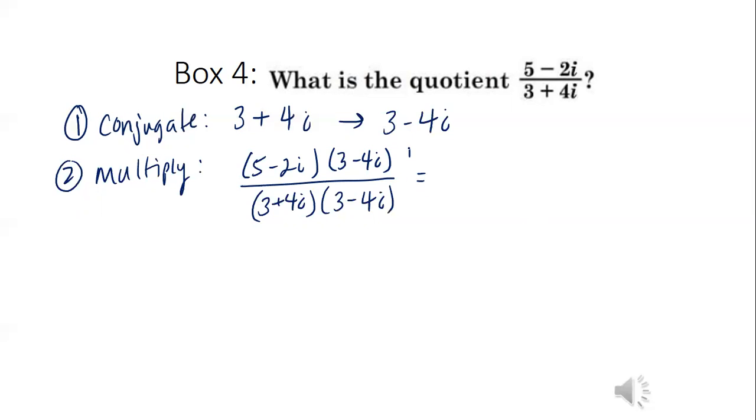This we're going to have to multiply using foil. So 5 times 3 gives us 15. 5 times negative 4i gives us negative 20i. Negative 2i times 3 gives us negative 6i. And negative 2i times negative 4i is positive 8i squared. Same thing on the denominator. 3 times 3 gives me 9. 3 times negative 4i gives me negative 12i. 4i times 3 gives me positive 12i. And 4i times negative 4i gives me negative 16i squared. Any questions about step two and multiplying?